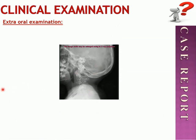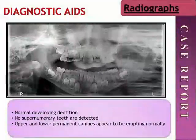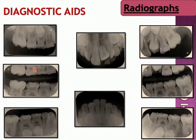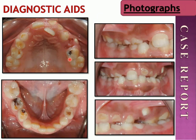According to the caries risk assessment tool, our patient is considered high caries risk, so it is important to protect and prevent further oral destruction. For diagnostic aids, we first took an OPG, which showed normal developing dentition with no supernumerary teeth detected, and upper and lower permanent canines appearing to erupt normally. We also took a full-mouth radiograph including two bitewings, four periapicals, and two occlusal radiographs. Intraoral photographs showed attrition, a crossbite with retained deciduous teeth, a retained root with an erupting premolar, hypoplasia, and multiple dental caries.